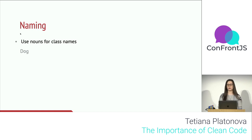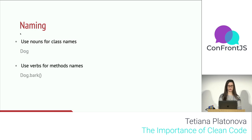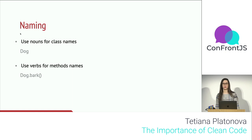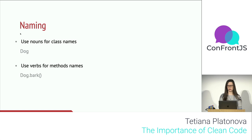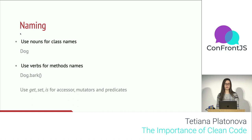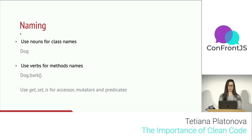When it comes to naming classes: classes represent objects, and in natural language we use nouns to name objects, so naming classes with nouns is a good way to go. Classes also have methods, and methods represent actions — so naming methods with verbs is the solution. Also remember that accessors, mutators, and predicates should be named using the prefixes 'get,' 'set,' or 'is' accordingly.